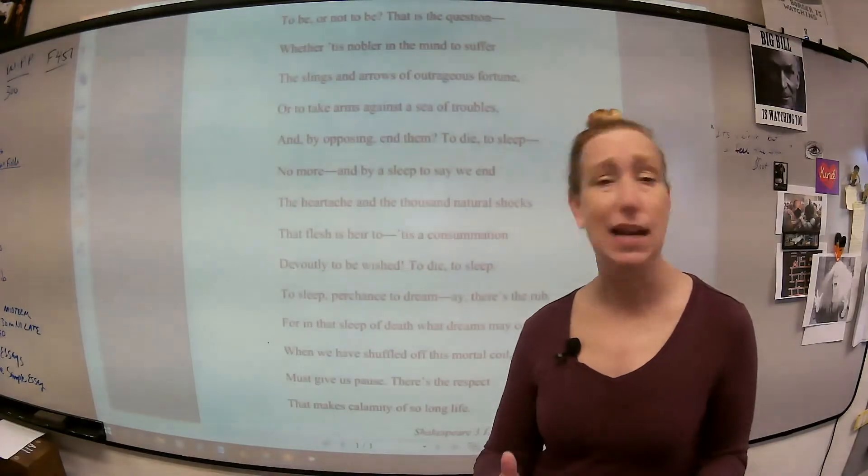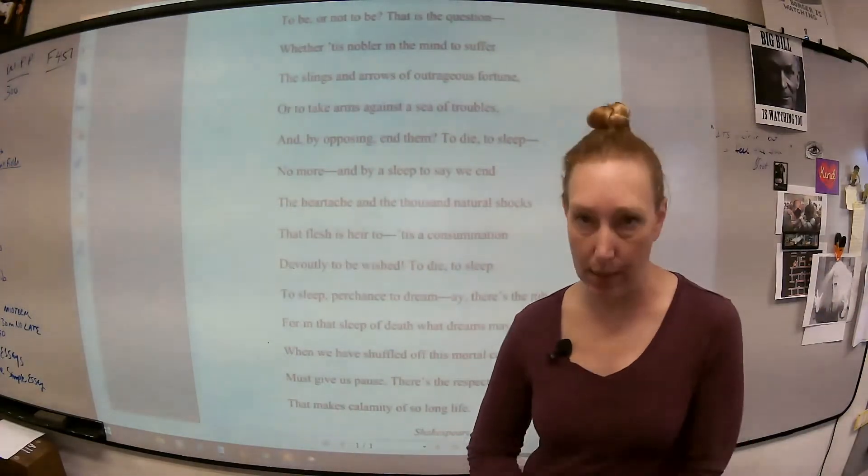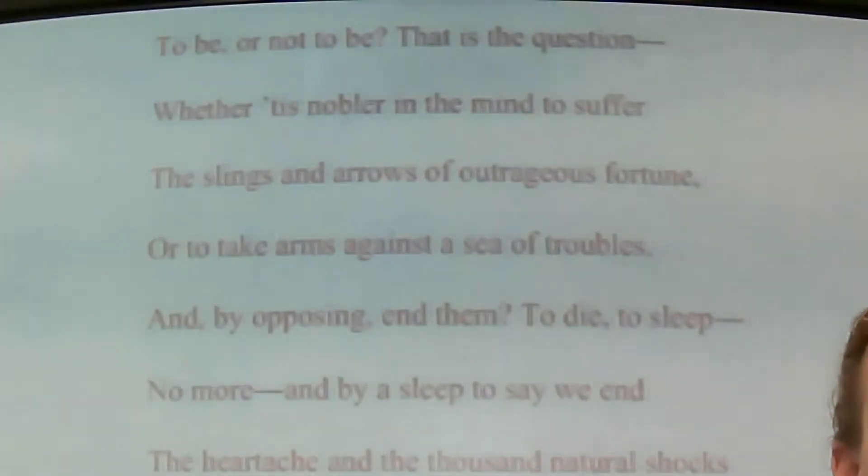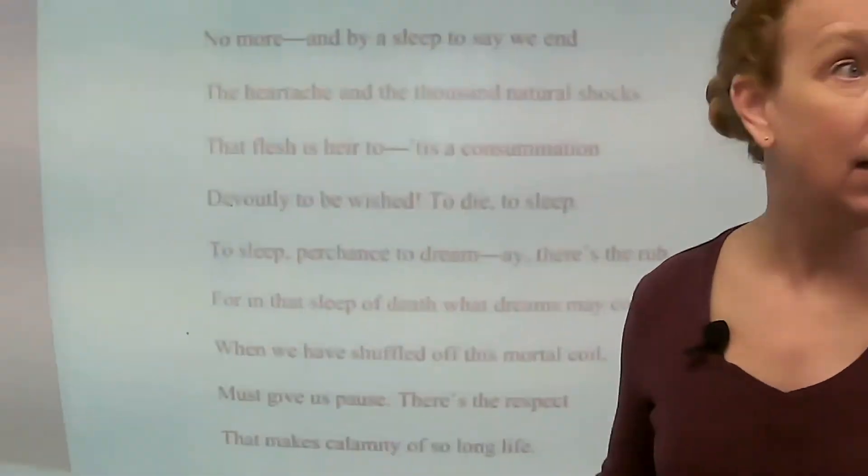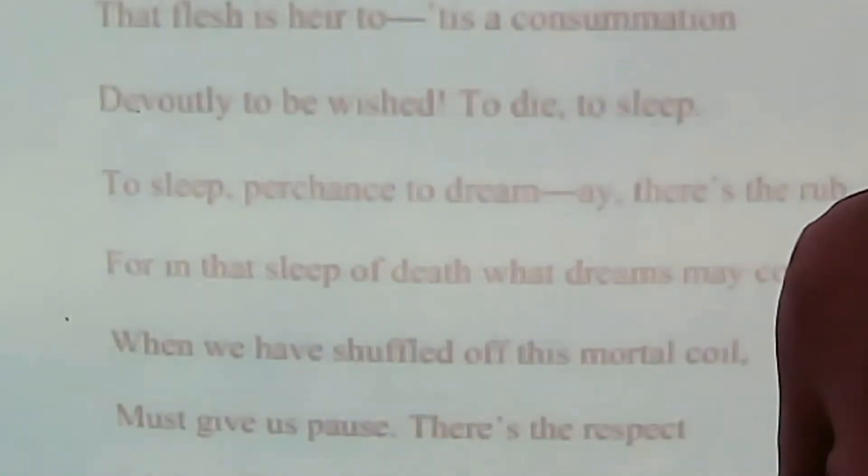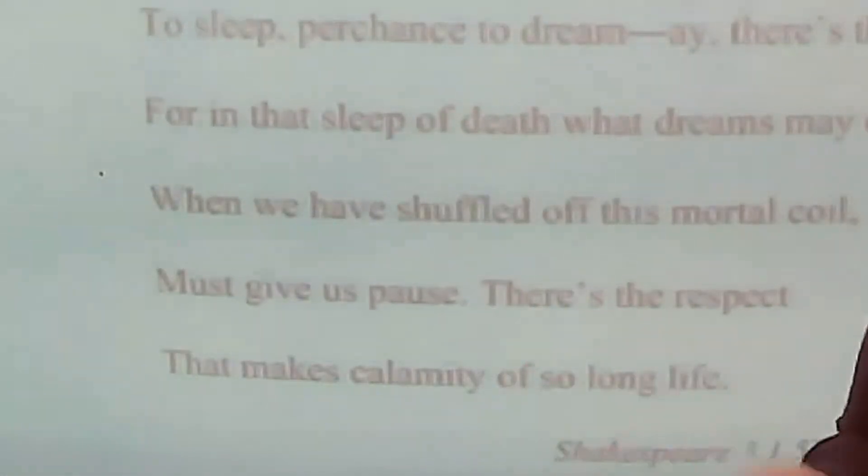I'm just going to read it. It's not going to make a lot of sense initially. I'm going to go through, explain it, and then hopefully it makes sense to you. To be or not to be, that is the question. Whether it is nobler in the mind to suffer the slings and arrows of outrageous fortune, or to take arms against a sea of troubles, and by opposing end them. To die, to sleep, no more. And by a sleep to say we end the heartache and the thousand natural shocks that flesh is heir to, the consummation devoutly to be wished. To die, to sleep, perchance to dream. There's the rub. For in that sleep of death what dreams may come, when we have shuffled off this mortal coil must give us pause. There's the respect that makes calamity of so long life.